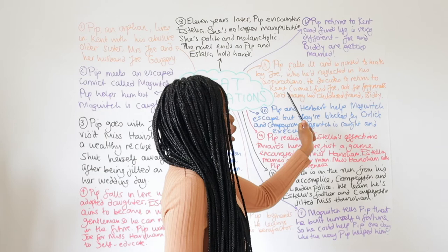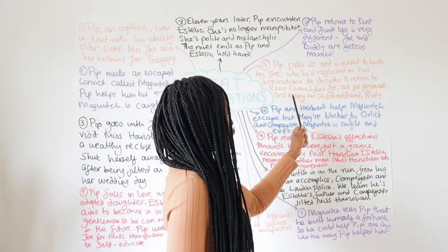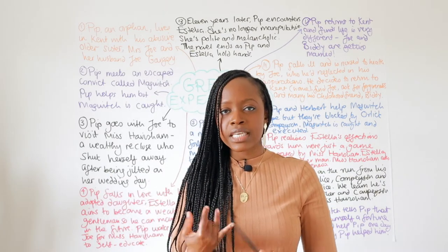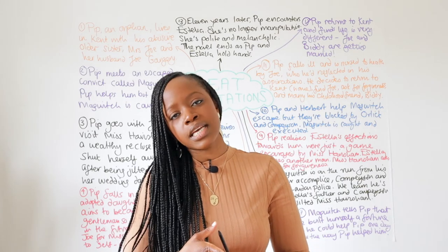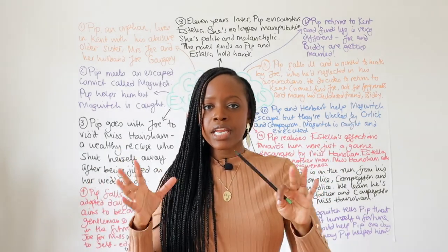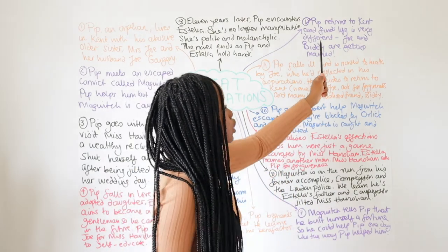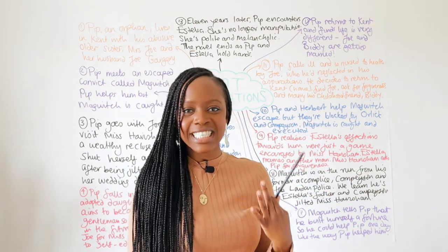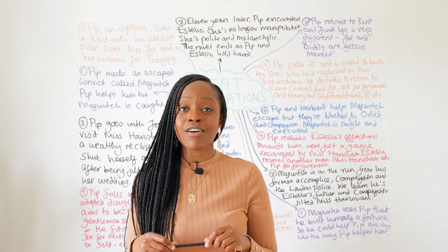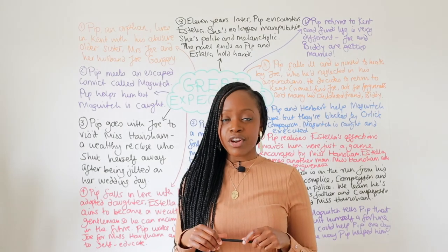Pip then decides to return to Kent, his hometown outside of London. He returns to Kent, finds Joe, asks for his forgiveness, and he also decides that he is going to marry his childhood friend called Biddy, whom he had completely neglected when he was so focused on winning the affections of Estella. However, when Pip does return to Kent, he finds that life is actually very different. He learns that Joe and Biddy are actually getting married — remember that Pip's sister had passed away. Biddy has not been waiting for him to return, and Joe and Biddy's lives have moved on.